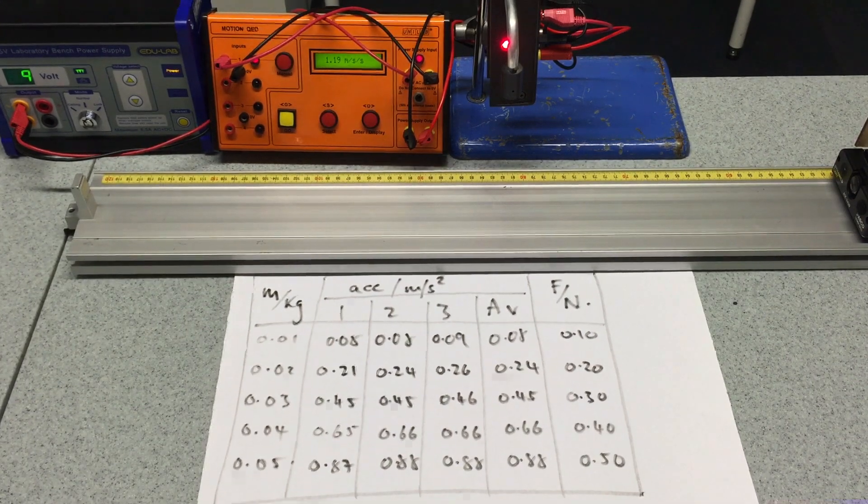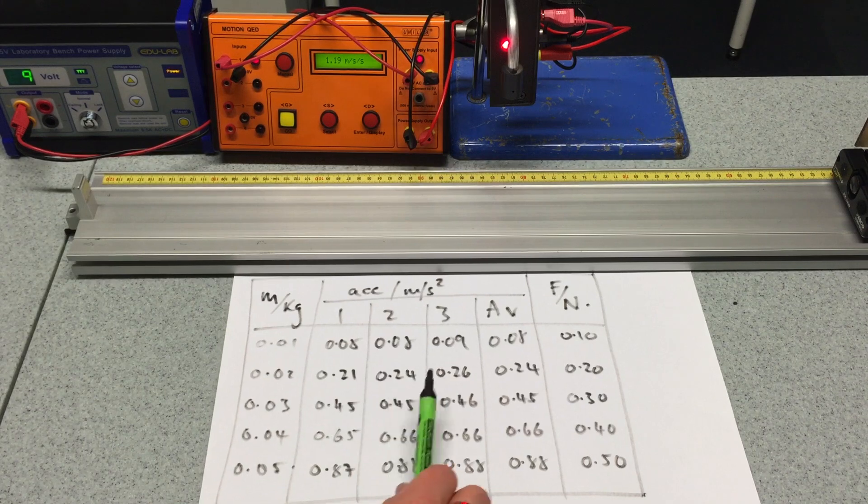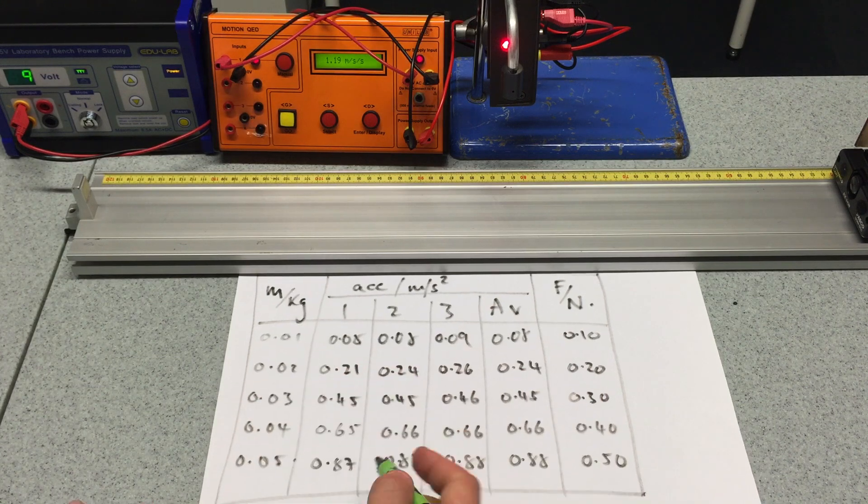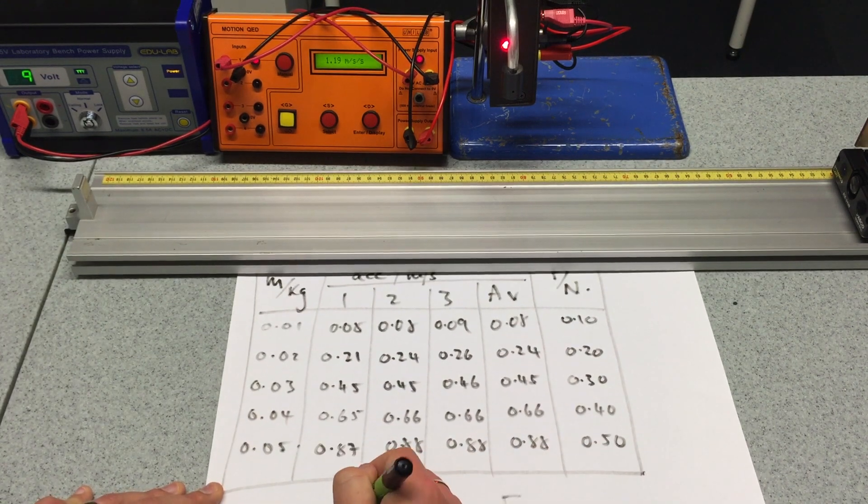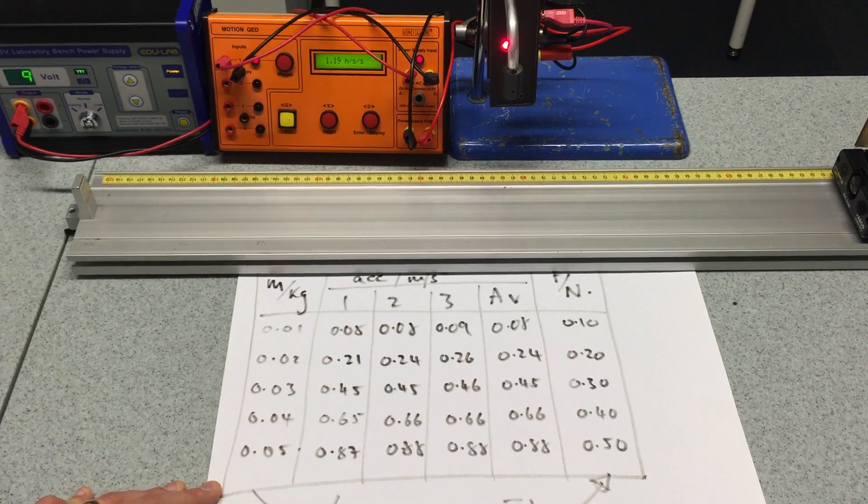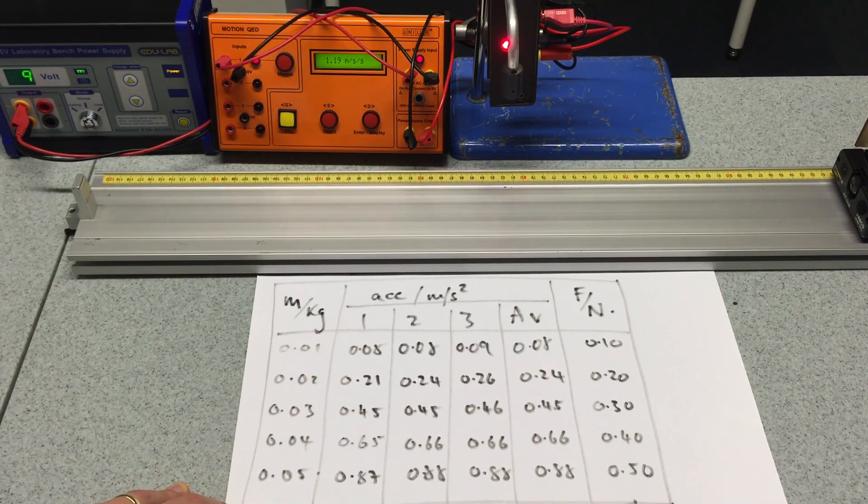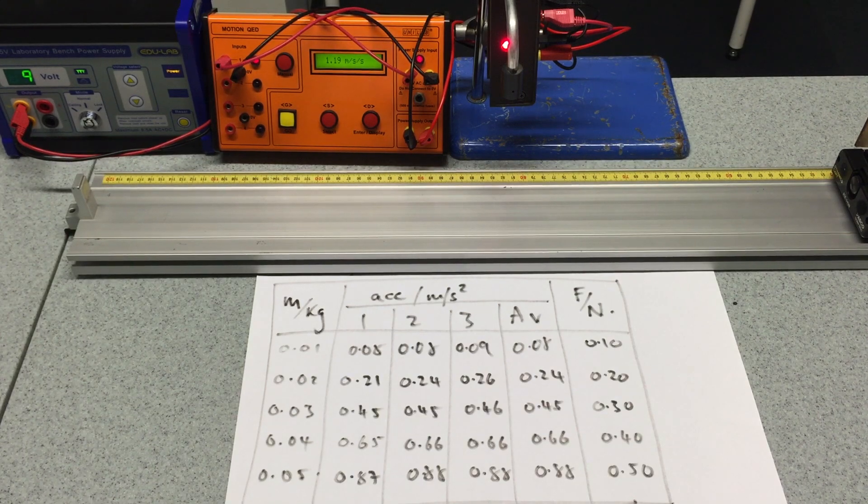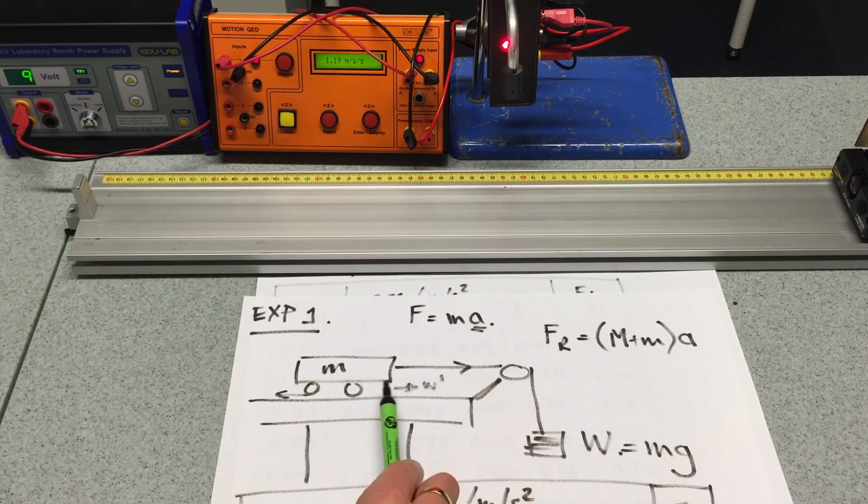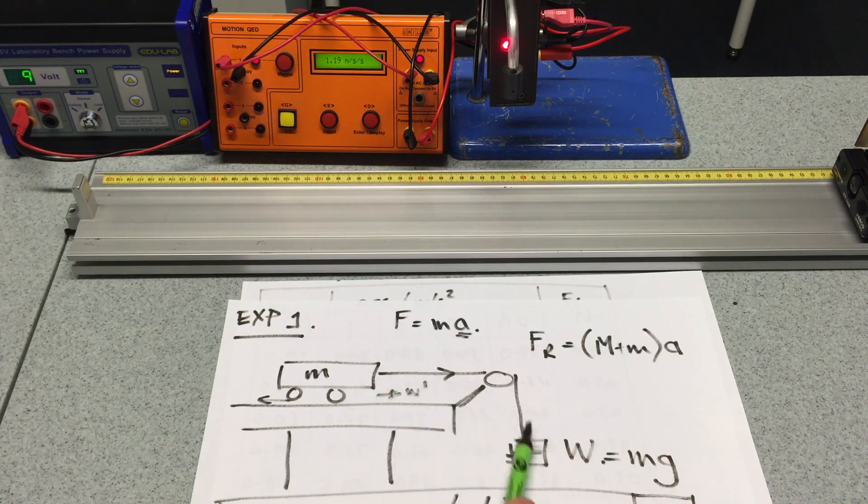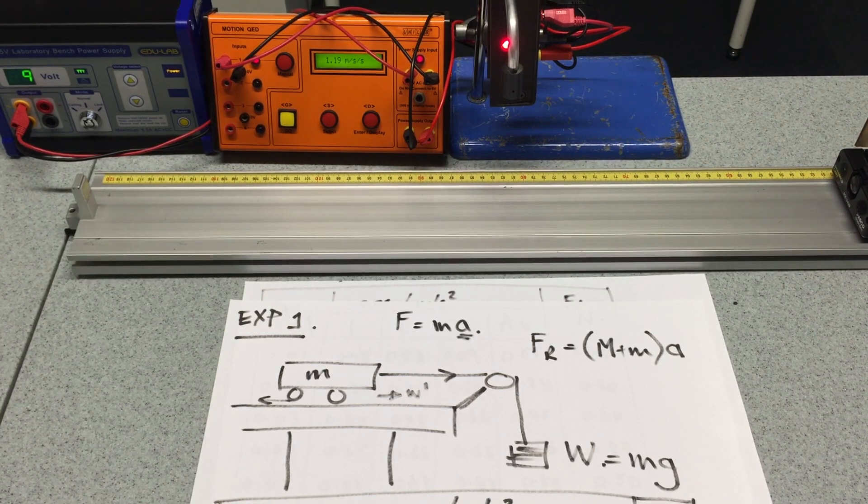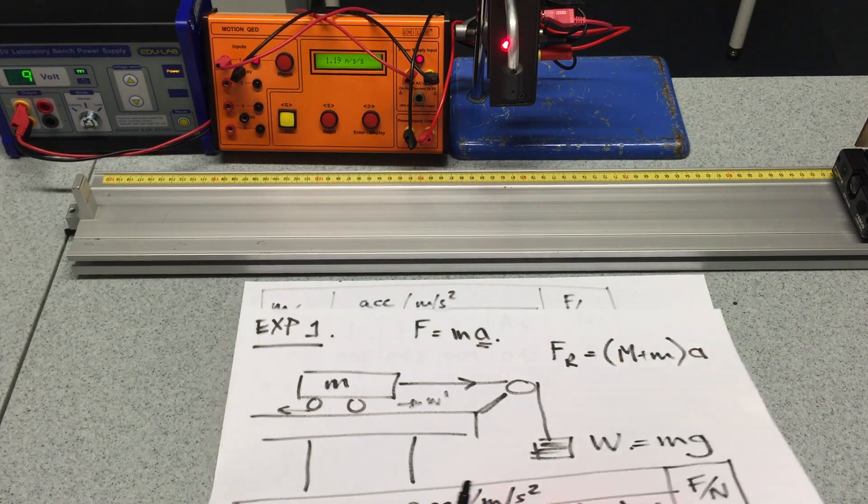So here are the finished results then. I've got the masses, the accelerating masses, the accelerations three times the average, and then the force, and of course the force is determined by saying F equals the mass times G. That's how we move from one side to the other side. Now, what are we going to do with these results? Well, we said in the first instance that we think that the resultant force, and we know the resultant force is just the weight because we friction compensate, is equal to the total accelerating mass of the system multiplied by A. So, I'm going to start working out what the total accelerating mass of the system is using these results.